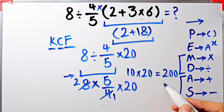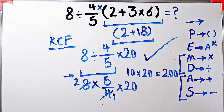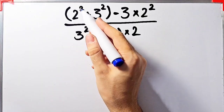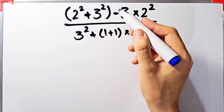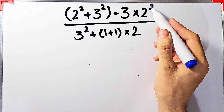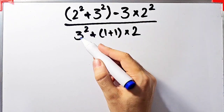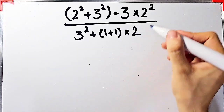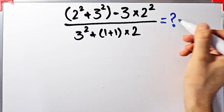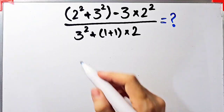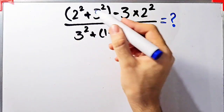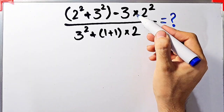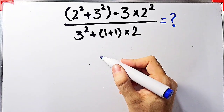Let's solve another question about the PEMDAS rule. In this question we have: (2² + 3²) − 3 × 2², all over 3² + (1 + 1) × 2. In this question we have exponents, parentheses, addition, subtraction, and multiplication.